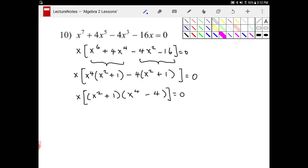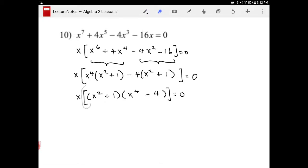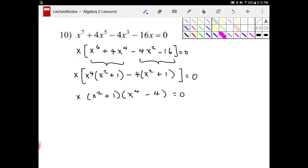This is x squared plus one times x to the fourth minus four equal to zero. I'm just going to get rid of these brackets here because there's really no need for that. Remember, multiplication is associative. So it doesn't matter what order we multiply in. And the x squared plus one doesn't factor any further. However, the x to the fourth minus four does. And that factors into x squared plus two, x squared minus two.